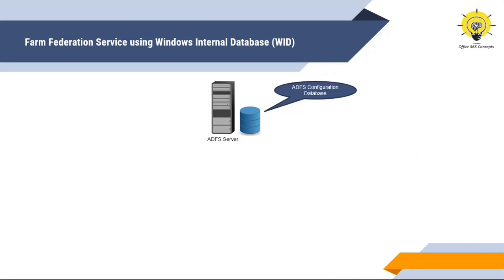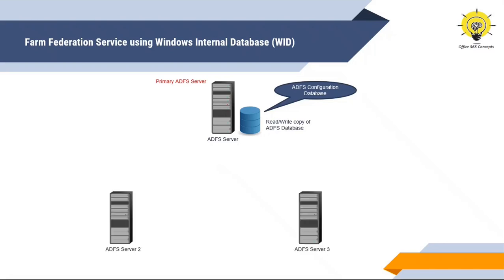This database is called the ADFS Configuration Database. ADFS uses this database to store configuration-related data. For example, if you create a relying party trust or make any changes within the ADFS server, all those changes and configuration will be stored within this database. The first ADFS server you install within your farm is called the primary ADFS server, and its database holds the read and write copy. If you add another ADFS server within your farm, that server will be named a secondary ADFS server and will hold a read-only copy of the database.